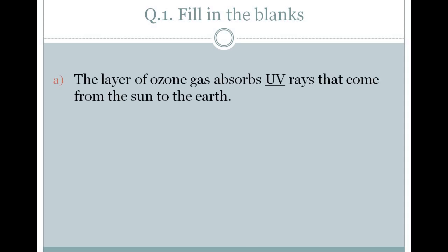The first fill in the blank is: the layer of ozone gas absorbs dash rays that come from the sun to the earth. The answer is UV. The long form of UV rays is ultraviolet rays. These rays are very harmful for us. So the answer of the first fill in the blank is UV.